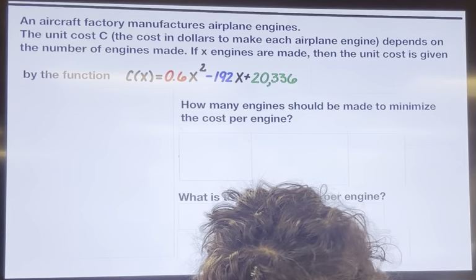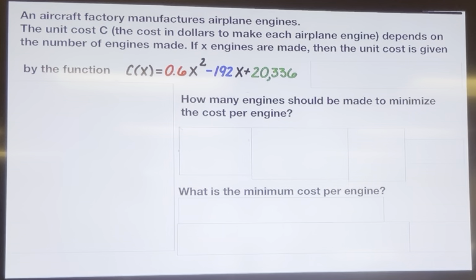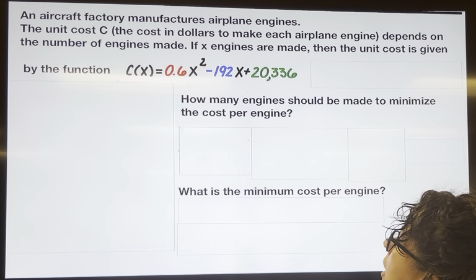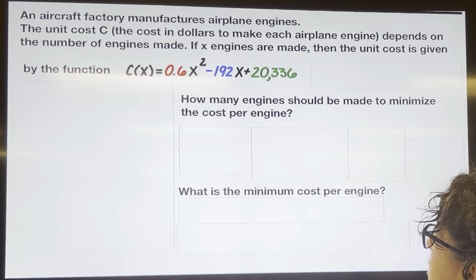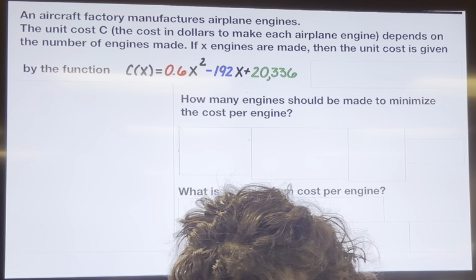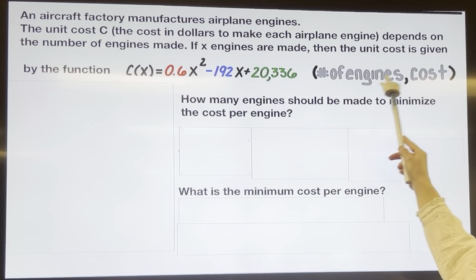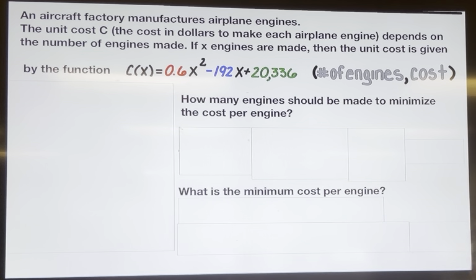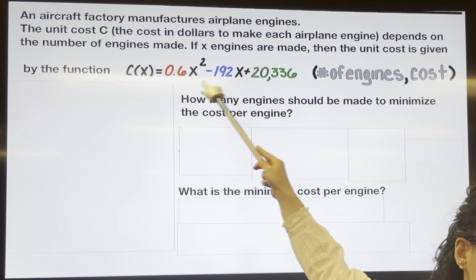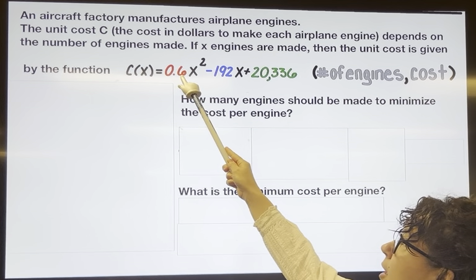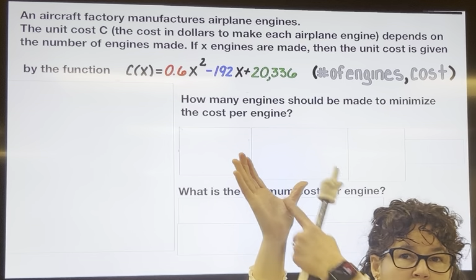Here is one more quick example. This time we have an aircraft factory making airplane engines. When we substitute in x, we're talking about how many airplane engines have been made, and c represents the cost in dollars. So all the points are number of engines comma cost. If we want to know how many engines should be made to minimize the cost, this is again a quadratic graphing as a parabola. The number in front of x squared is positive, so it opens up, which is why we have a minimum.